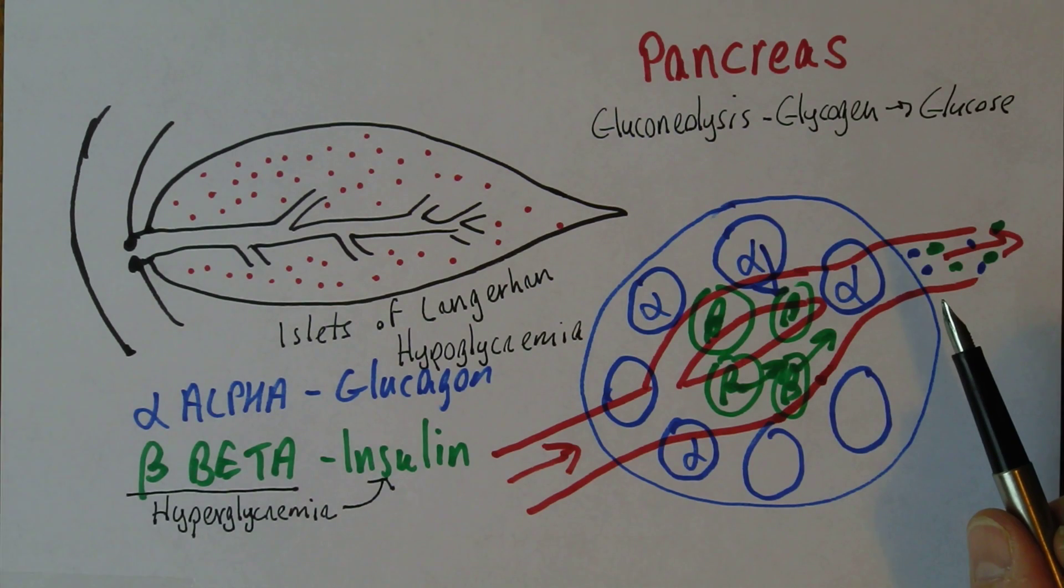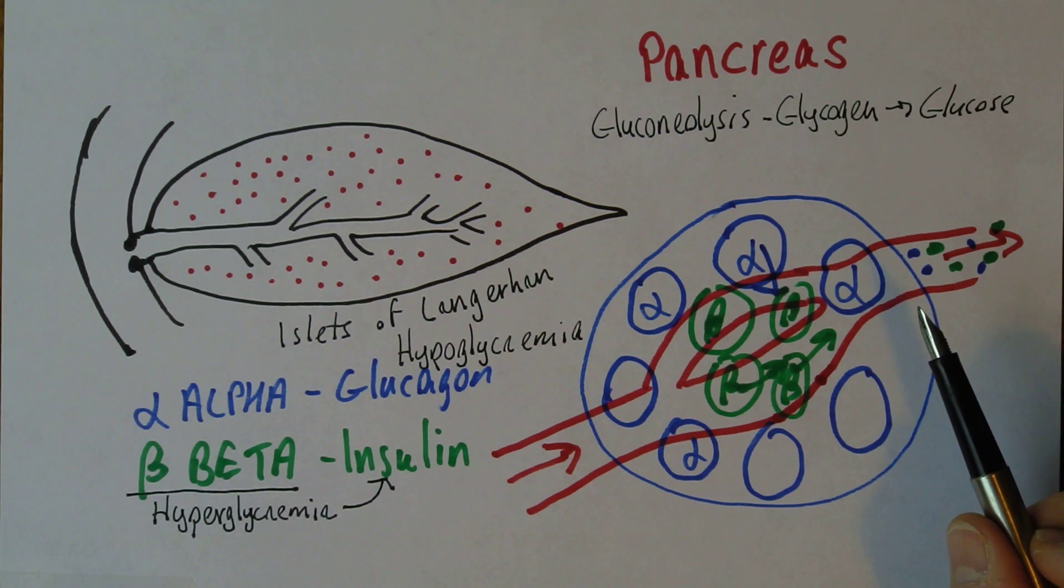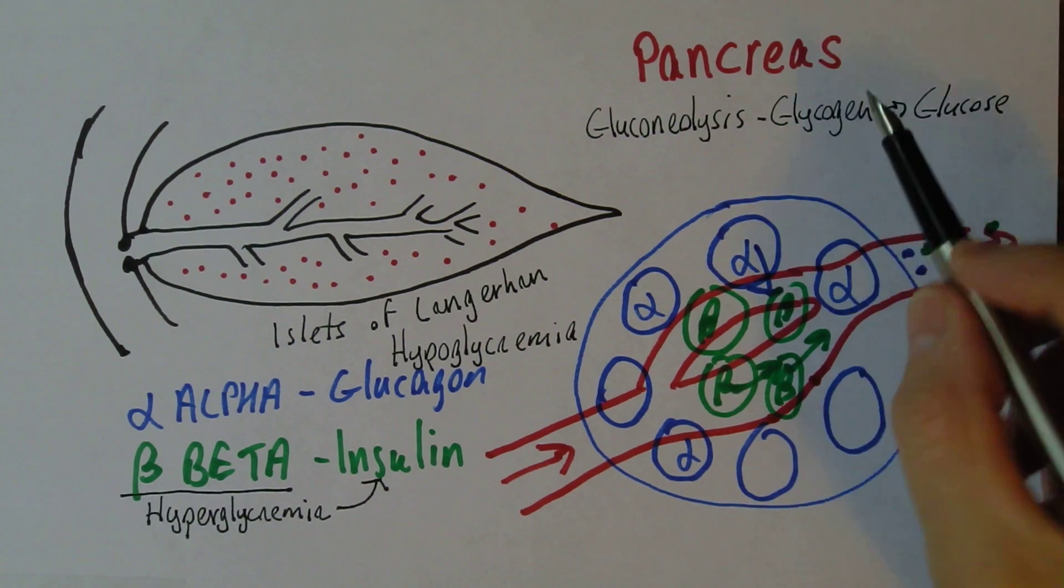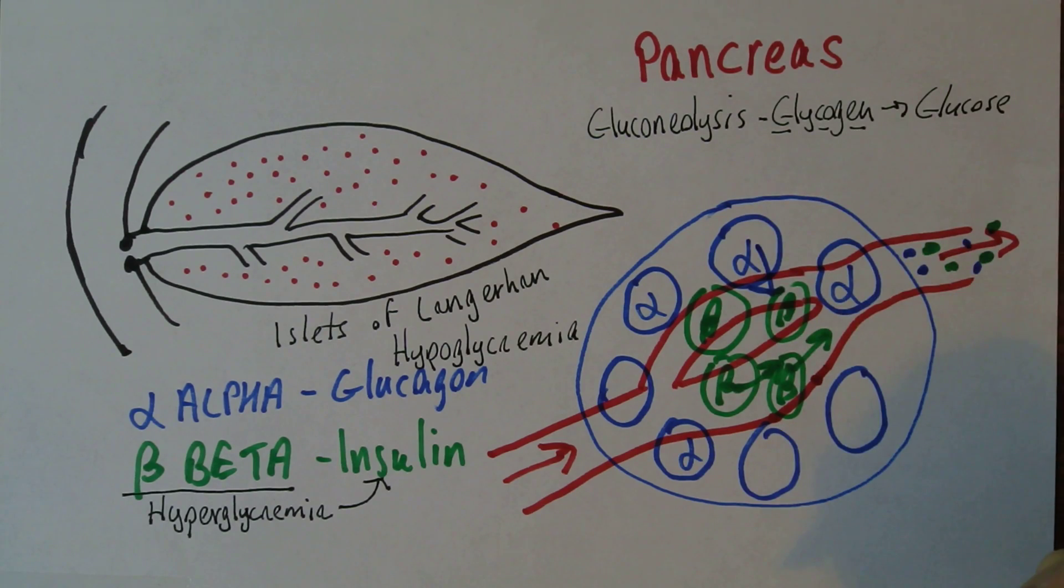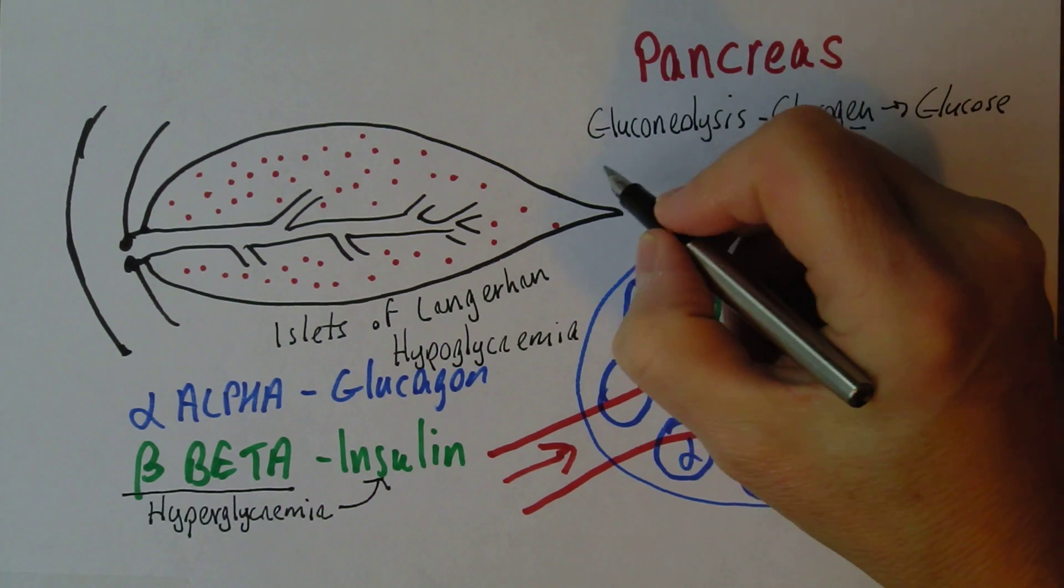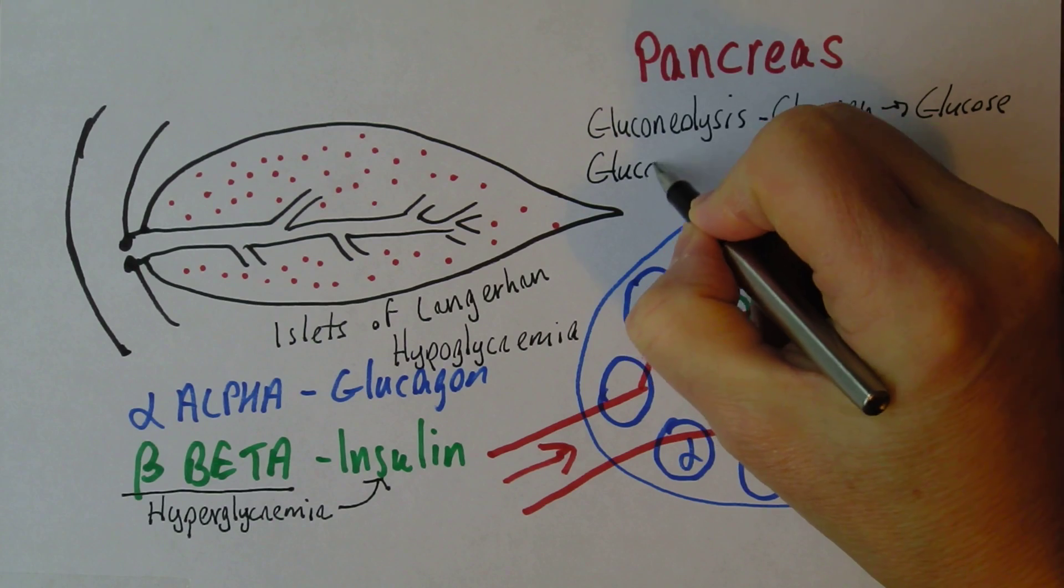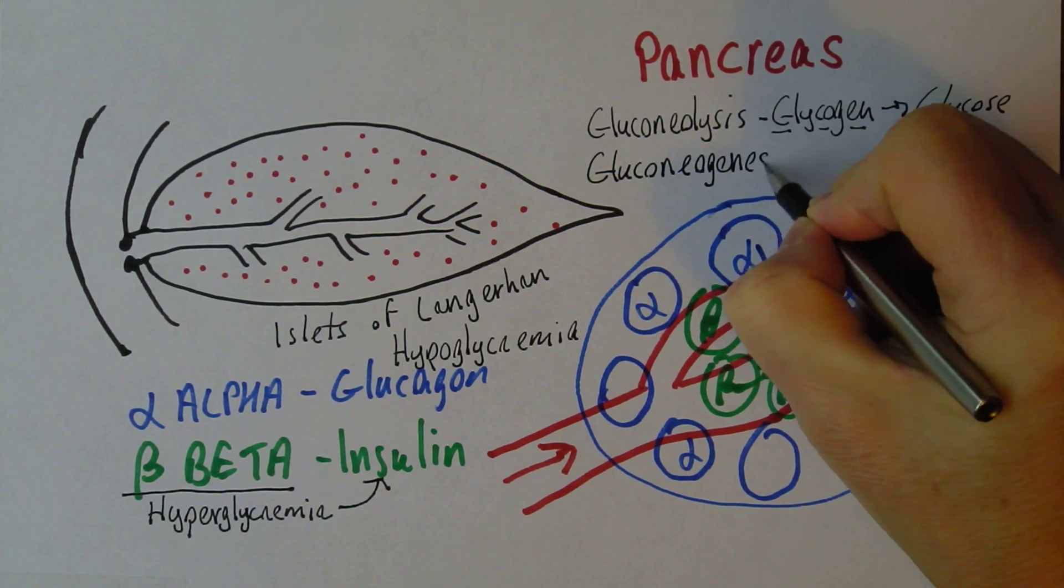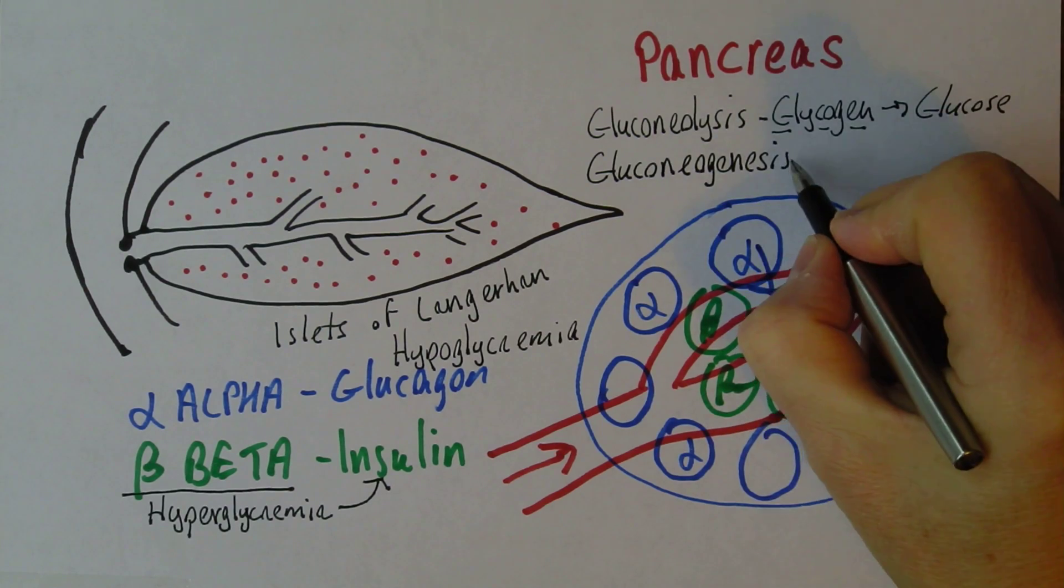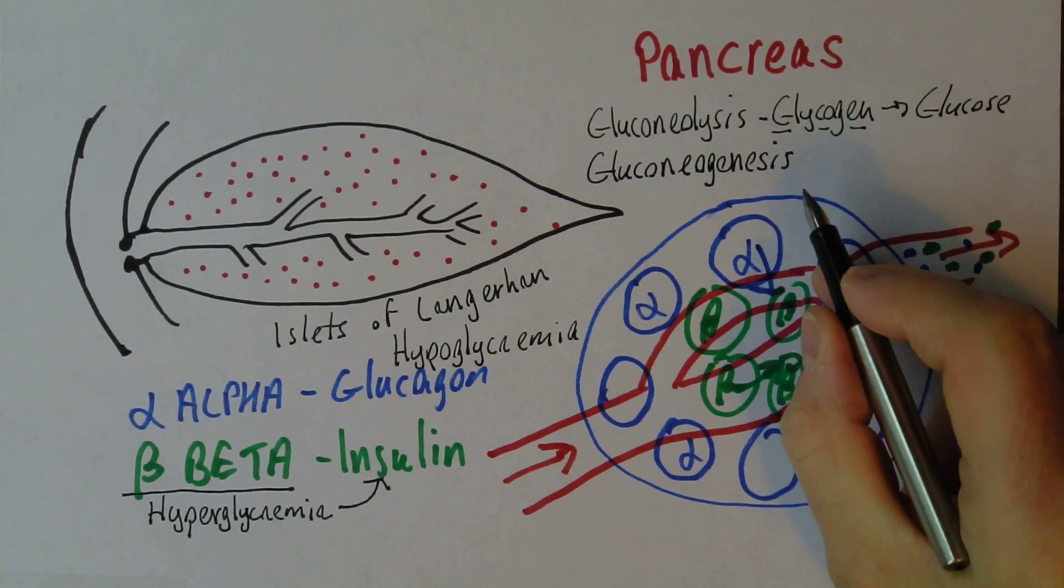But of course, humans are survival mechanisms. We are designed to survive. So if you run out of stored glycogen, that's not too bad. We can go on for a little bit yet because there's another process called gluconeogenesis. And again, this process is stimulated by glucagon.